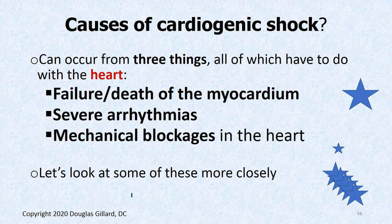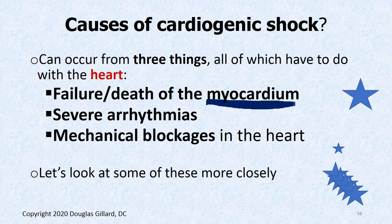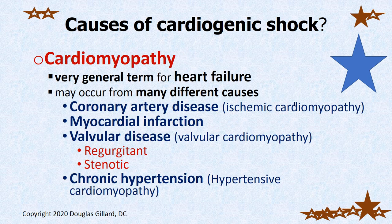What causes cardiogenic shock? Three categories: the myocardium fails — it's ischemic, doesn't work well, or has become hypertrophic; really bad heart arrhythmias like high-burden PVCs that prevent good blood ejection; and mechanical blockages. Looking more specifically: cardiomyopathy from any cause means you can't eject blood from the heart and you slip into cardiogenic shock. Causes include coronary artery disease — ischemic cardiomyopathy — myocardial infarction, which is one of the most common causes of cardiogenic shock, and valvular disease including regurgitant and stenotic diseases.